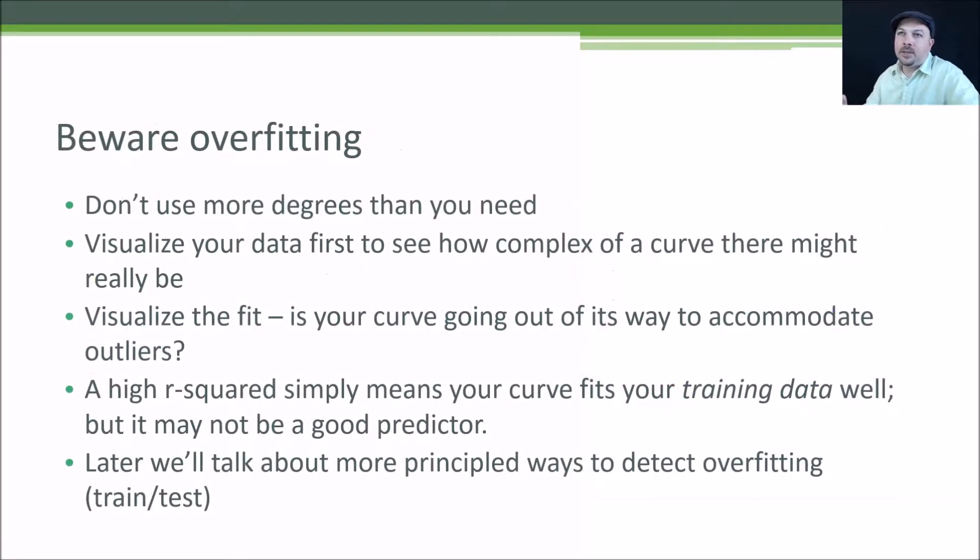But more degrees isn't always better. Usually there's some natural relationship in your data that isn't really all that complicated. And if you find yourself throwing very large degrees at fitting your data, you might be overfitting. If you have data that's all over the place and has a lot of variance, you can create this line that just goes up and down to try to fit that data as closely as it can. But in fact, that doesn't represent the intrinsic relationship of that data. It doesn't do a good job of predicting new values. So always start by just visualizing your data and think about how complicated does this curve really need to be.